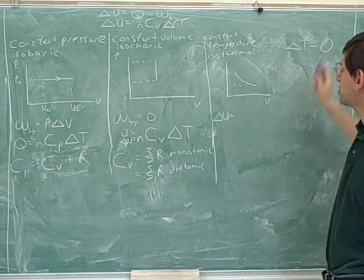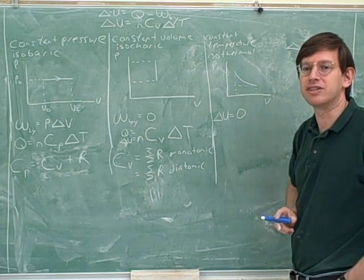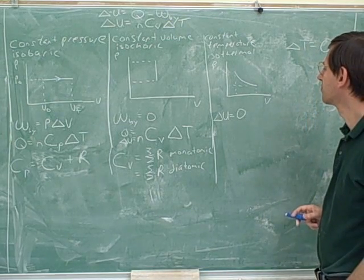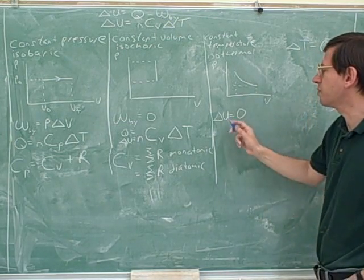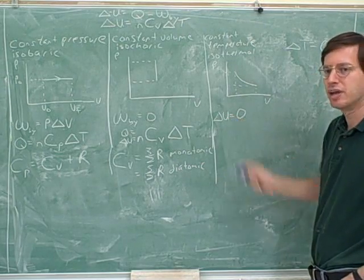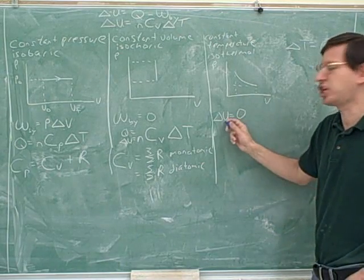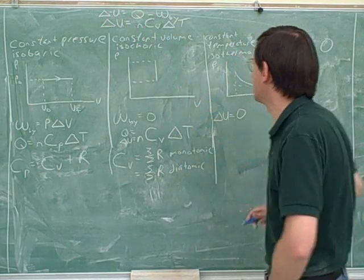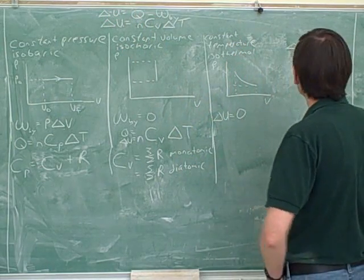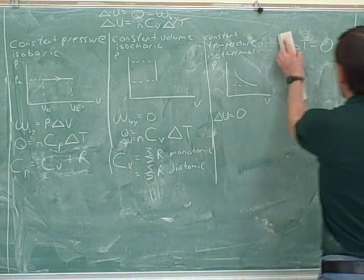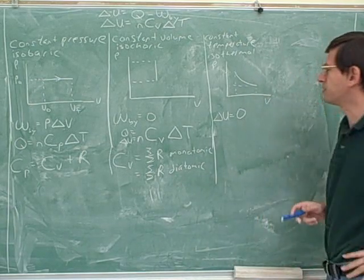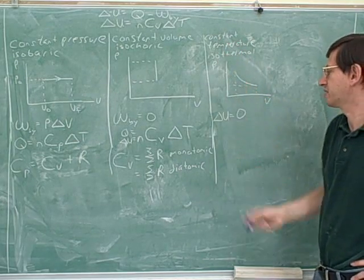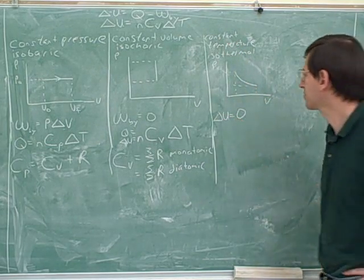Alright, so the temperature is not changing, which means that the energy is not changing. Now we don't want to confuse U and delta U. There still is energy, but there's no change in the energy. And it's delta U that goes into the formula here, into our first law of thermodynamics. This is one of the most commonly tested processes, so it's very important when we see an isothermal process to remember that means that delta U is zero.